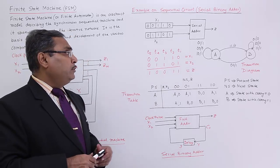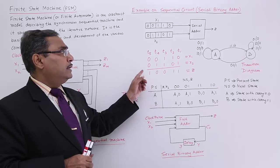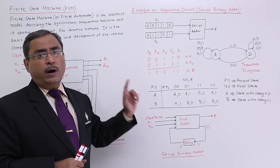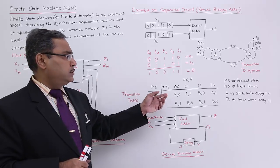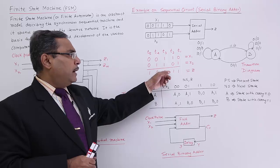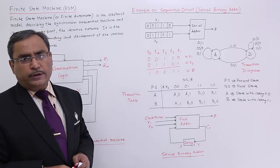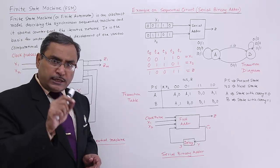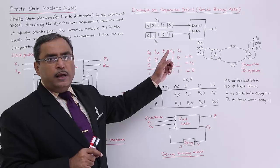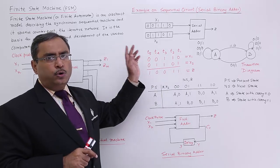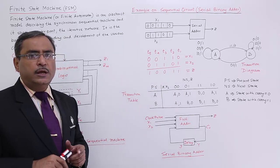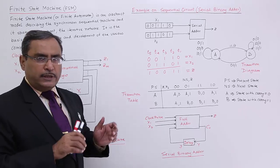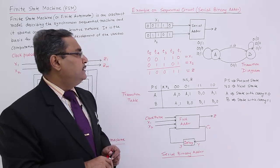Now, I want to represent this serial adder — it is a synchronous sequential adder. It is sequential because not only the present inputs but also the previous stage carry is counted. It is synchronous because one clock pulse is applied, then one bit from X1 and one bit from X2 go to the serial adder for addition, which also accounts for the previous state carry.